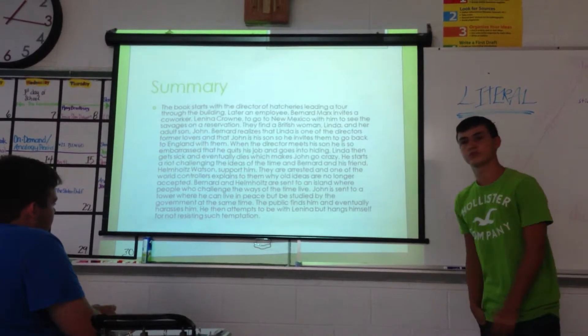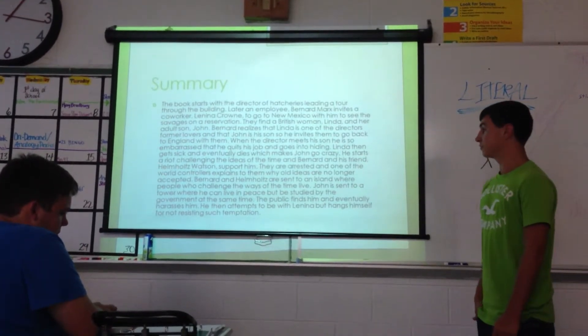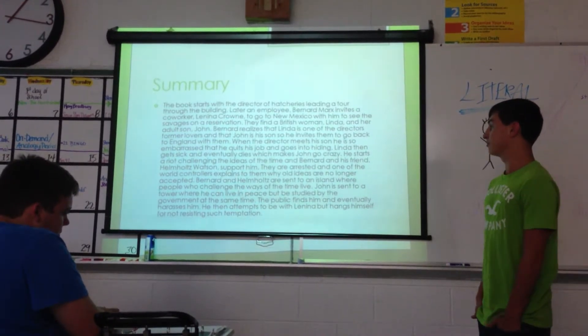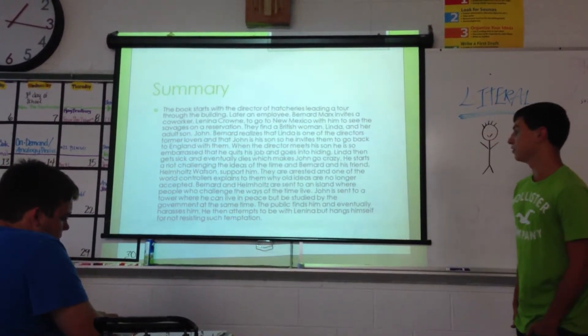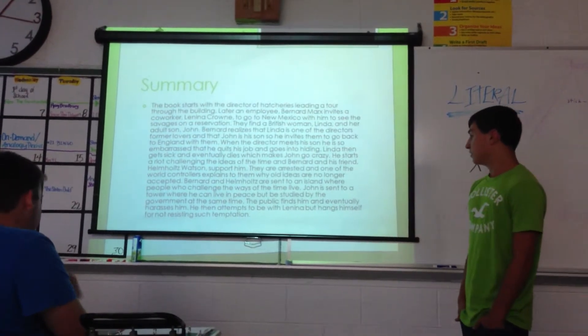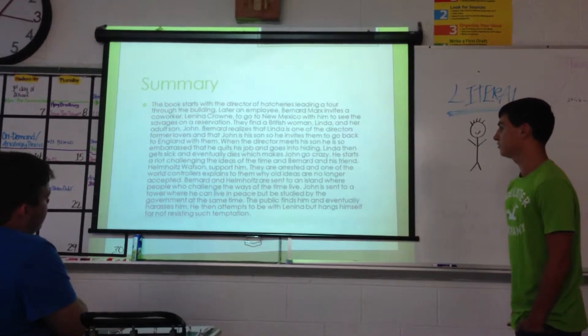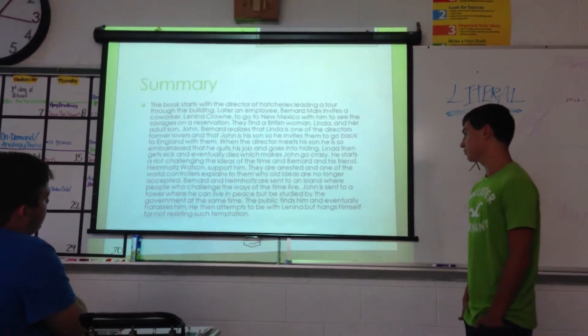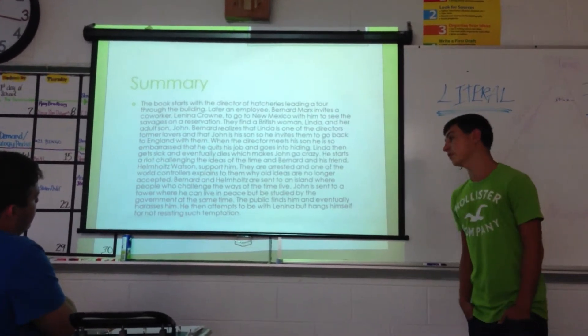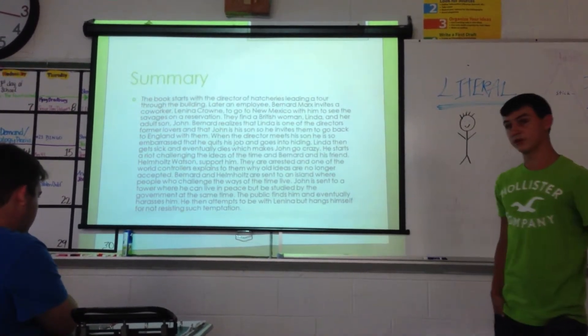There's nine world controllers, like nine dictators throughout the world. And one of them, the one that's in charge of London, explains to them why all their ideas are no longer accepted. Bernard and Helmholtz, who's his friend, they're sent to an island where people challenge ways of the town to live. And John's sent to a town where he can live in peace, but he can also be studied.